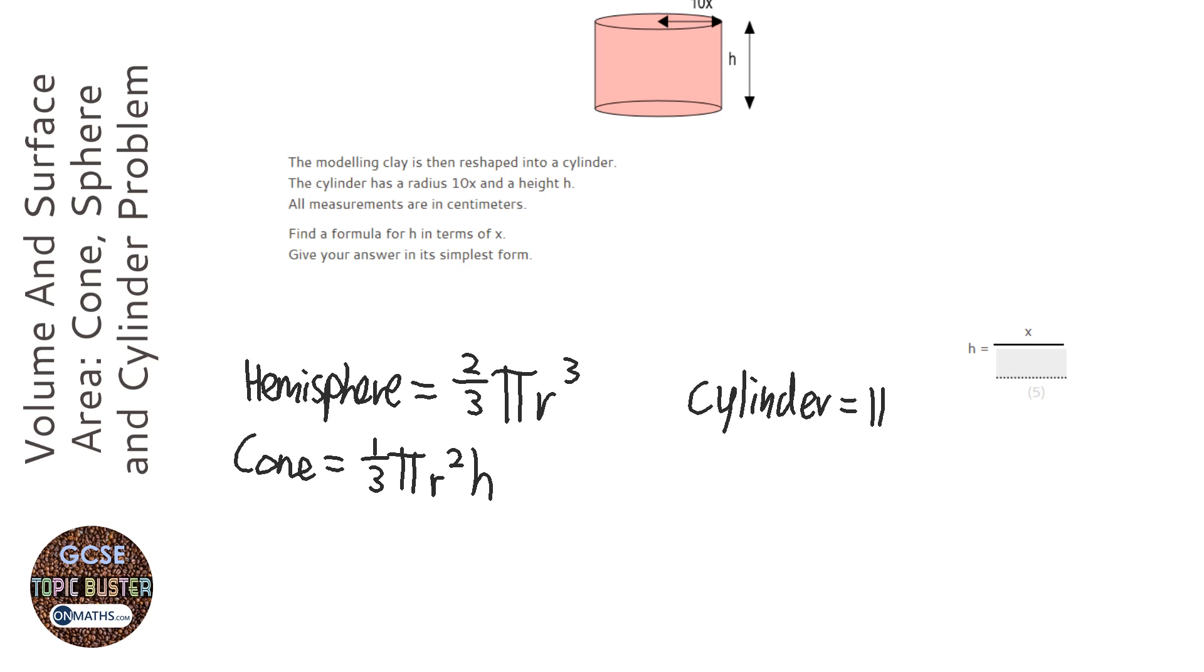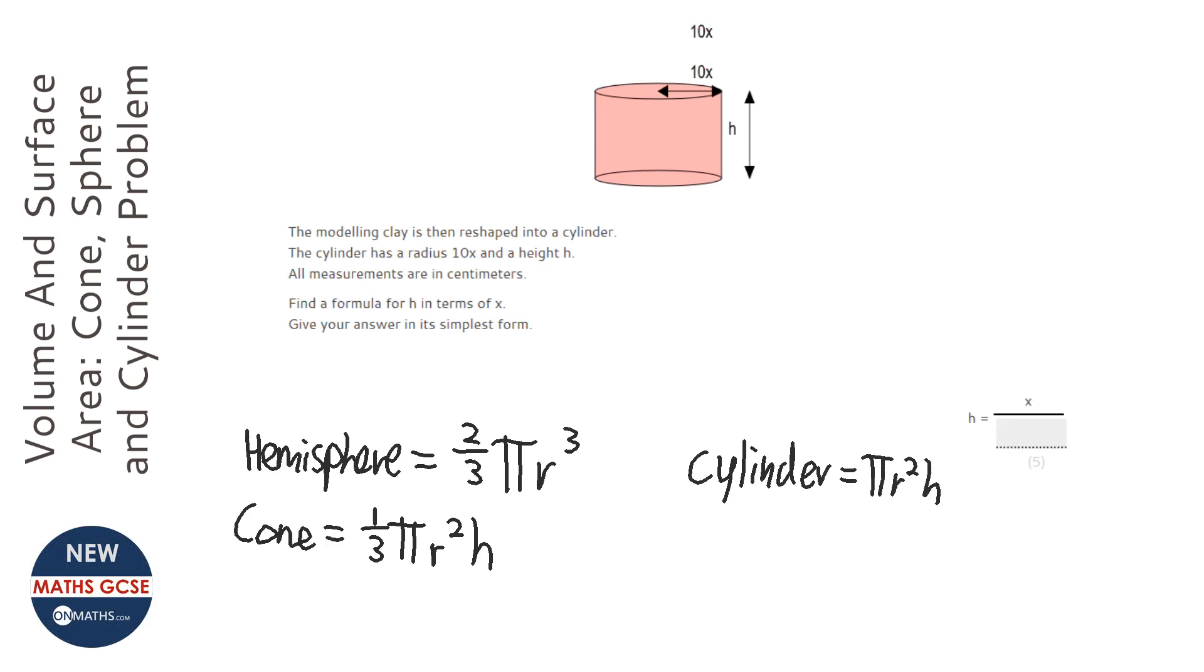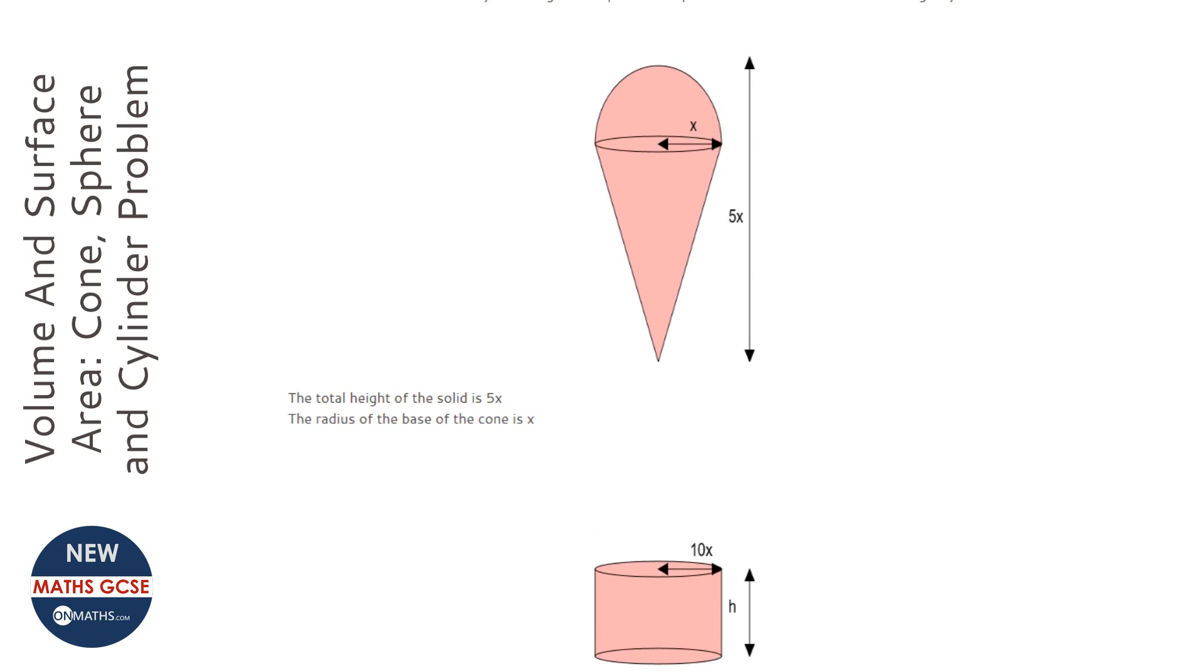Okay, now we need to find out what the bits are. So for the hemisphere we just need r. Well, that's quite simple because r is just going to be x, it's the radius of the hemisphere. Okay, now what's more difficult is to work out the height of the cone.